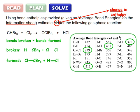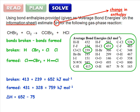Solving the problem is a matter of adding together the bond energies of the broken bonds, and separately the bonds formed, and then subtracting the second sum from the first.